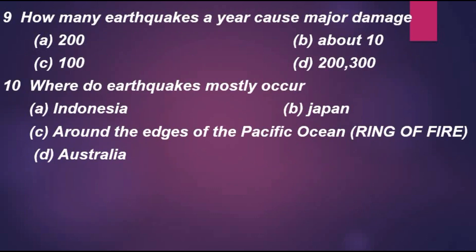Question 9: How many earthquakes a year cause major damage? Option A: 200. Option B: about 10. Option C: 100. Option D: 200 to 300. The correct answer is option B, about 10.